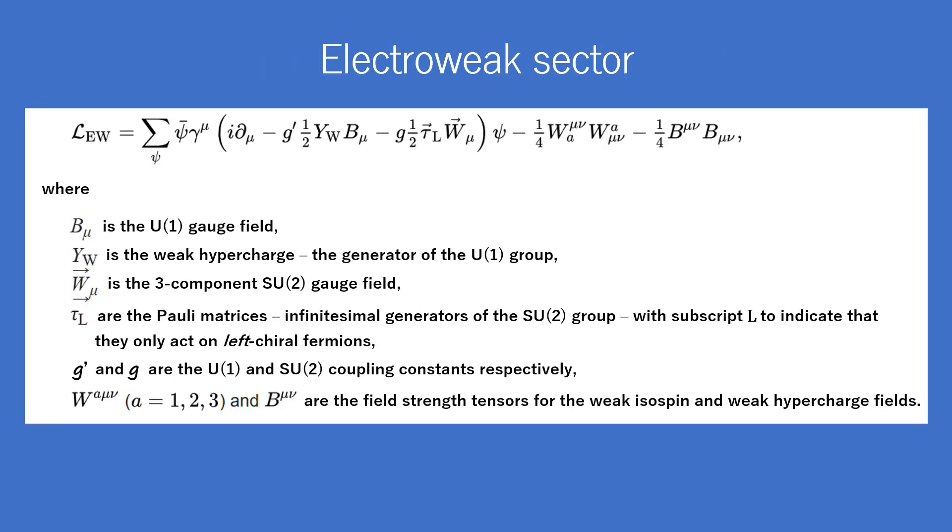The electroweak sector is a Yang-Mills gauge theory with the symmetry group U(1) × SU(2)_L, where Bᵘ is the U(1) gauge field. Y_W is the weak hypercharge, the generator of the U(1) group, and Wᵘ is the three-component SU(2) gauge field.